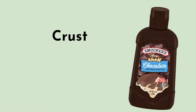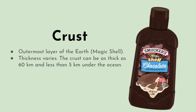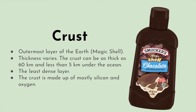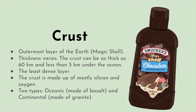The outermost layer of the Earth is the crust — what we get to walk on every day — and we represent it with magic shell, that chocolate that hardens on top of your ice cream like on a Dilly Bar from Dairy Queen. Its thickness varies: the crust can be as thick as 60 kilometers and less than 5 kilometers under our oceans. It is the least dense layer, made up of mostly silicon and oxygen. There are two types: oceanic, made of basalt, which is denser, and continental, made of mostly granite.